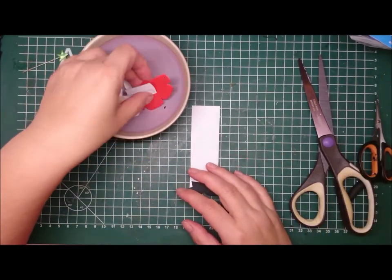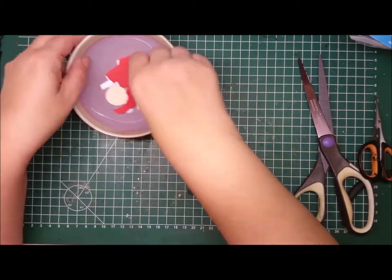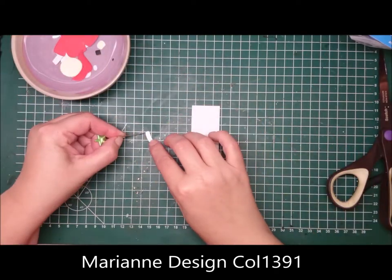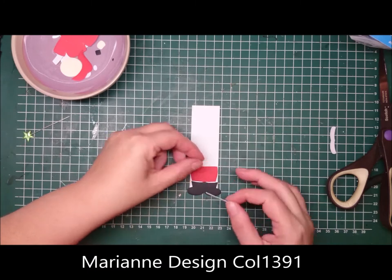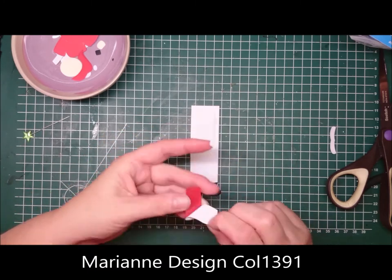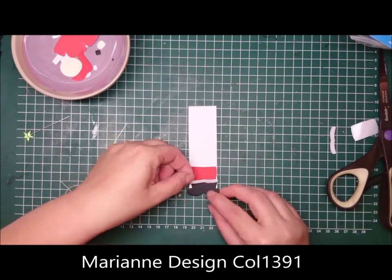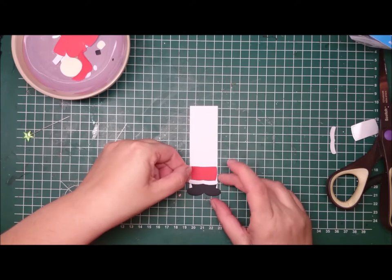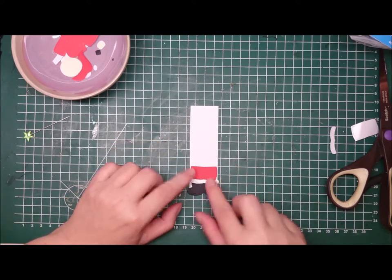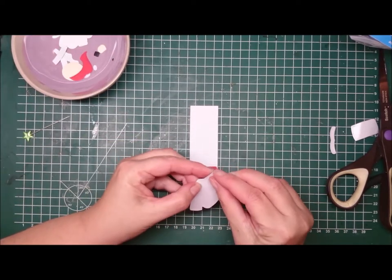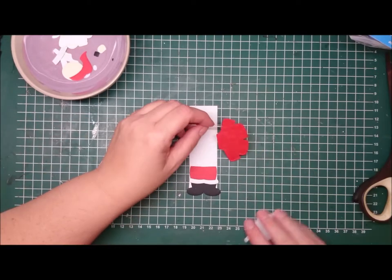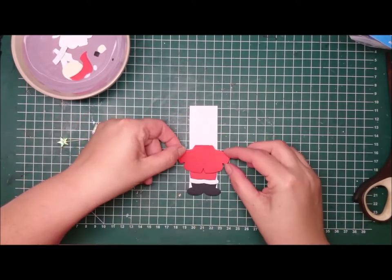So I'm building together the Mariana Design Collectible Santa. That is 1391. But you can use a stamp or anything that you have. Maybe a die cut of a lantern or a little light in a house or a star. You know, anything that could use light.